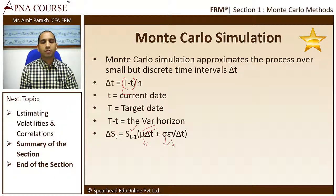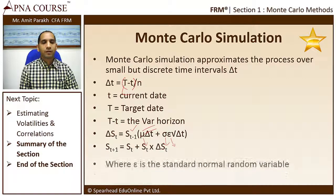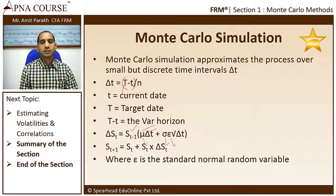This term here is the square root of delta t. The new stock price shall be the old stock price plus S_t multiplied by delta S_t, where epsilon is taken as the standard normal variable.